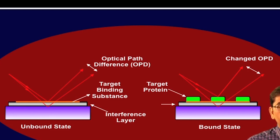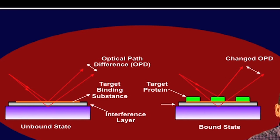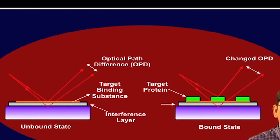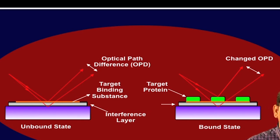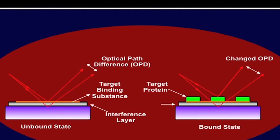The signal is created by an additional phase shift or optical path length difference, which is caused by the adsorbate biolayer. The biomolecules are printed on the surface. The left-hand panel shows the unbound state, and the right-hand panel shows the target protein bound state. The optical path length difference caused by target protein binding to the biomolecule printed on the surface is measured here.